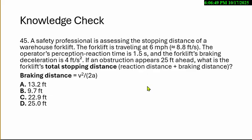It's reaction distance plus the braking distance. They'll give you this formula for the braking distance. Velocity squared, V times V, is divided by 2 times the acceleration. They're going to tell you negative acceleration of 4 feet per second. So is the distance A, 13.2, B, 9.7, C, 22.9, or D, 25.0 feet?